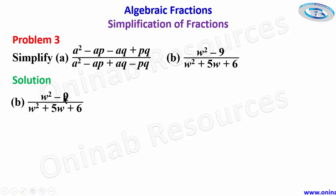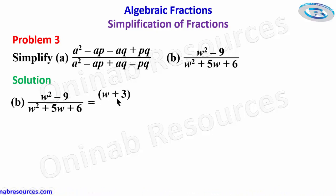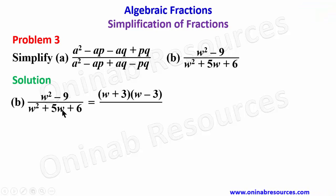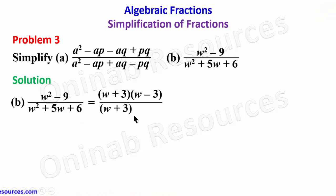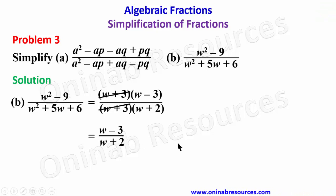For Problem 3 part (b), the numerator w² − 9 is a difference of two squares, written as w² − 3², which factorizes as (w + 3)(w − 3). The denominator w² + 5w + 6 is a quadratic; its two factors whose product is 6 and sum is 5 are 3 and 2, giving (w + 3)(w + 2). The (w + 3) cancels, leaving (w − 3) over (w + 2).